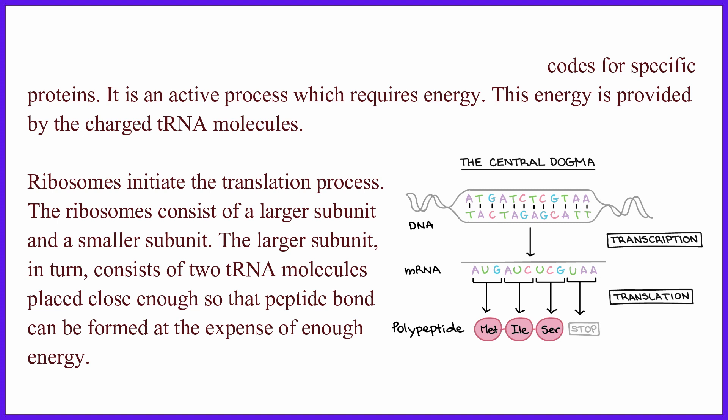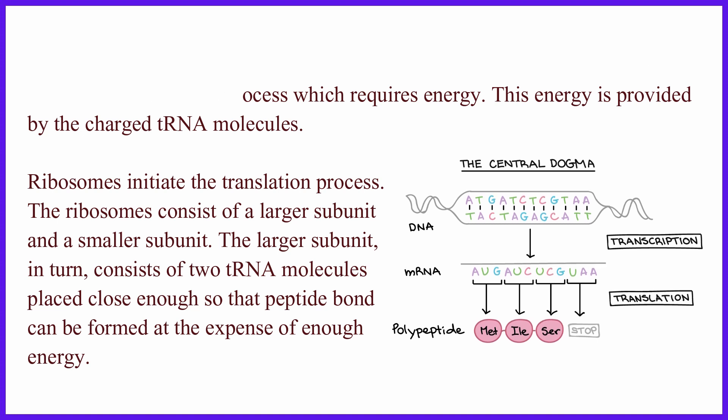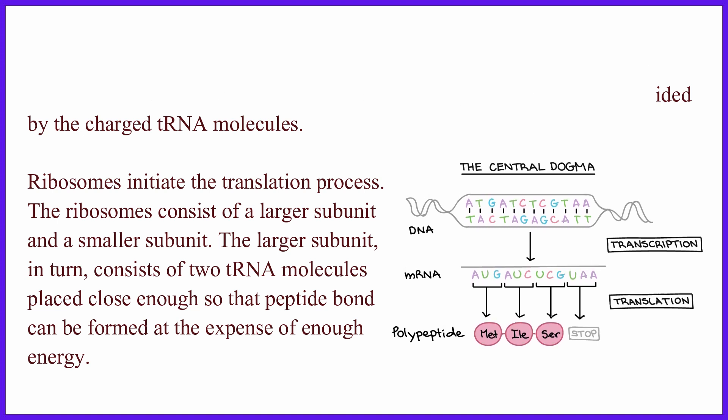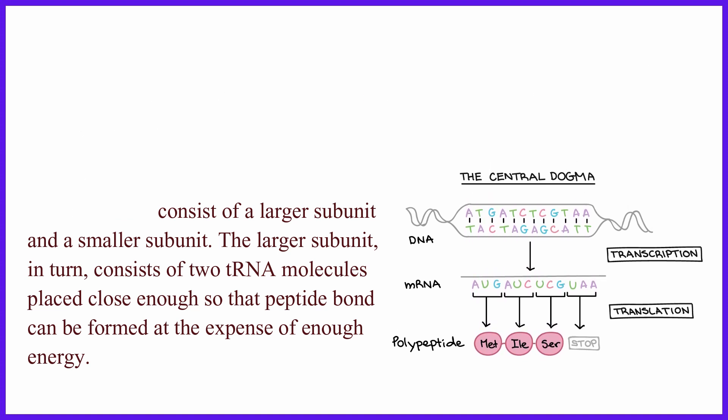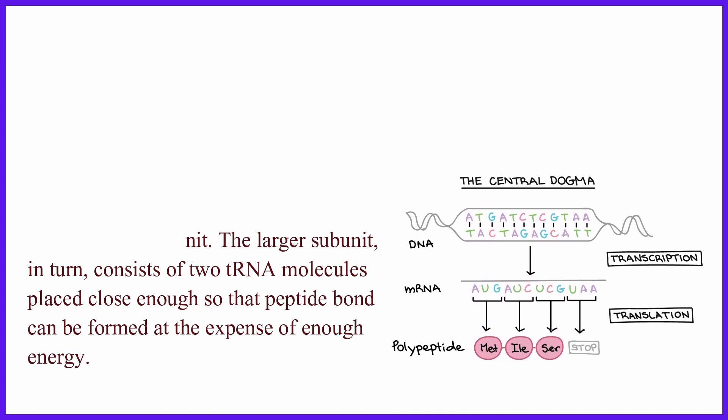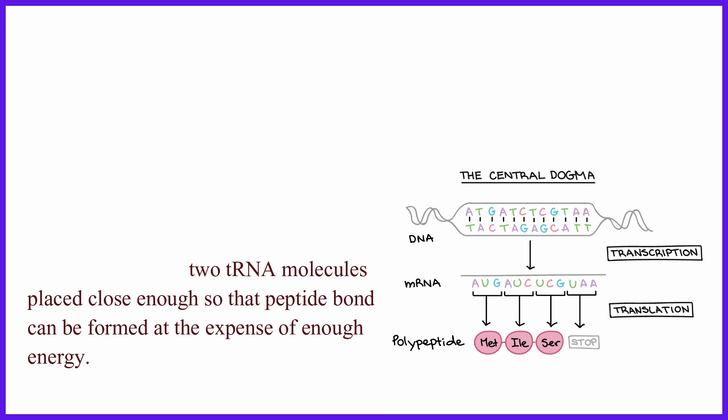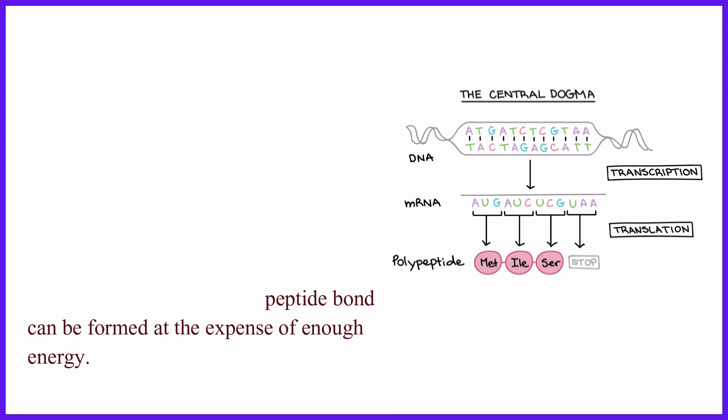The ribosomes consist of a larger subunit and a smaller subunit. The larger subunit, in turn, consists of two tRNA molecules placed close enough so that a peptide bond can be formed at the expense of enough energy.